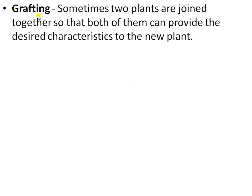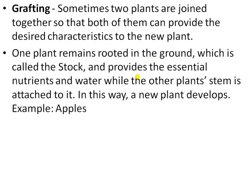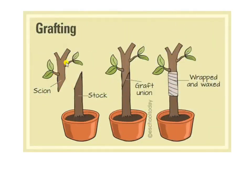Next is the grafting method. Grafting is when two plants are joined together so that both can provide the desired characteristics to the new grafted plant. One plant remains rooted in the ground — called the stock — which provides essential nutrients and water, while the other plant's stem is attached to it — that is the scion. In this way a new plant develops. For example, in apple. The scion is the part attached to the stock. After grafting, we re-join these two branches of different plants, wrap it, and wax it. It grows into a new plant — that is grafting.